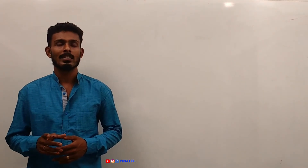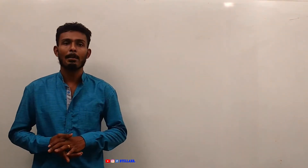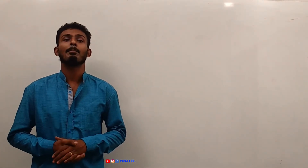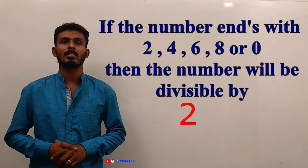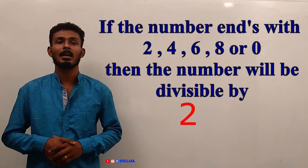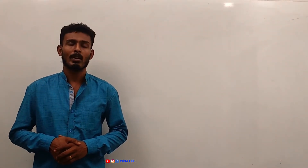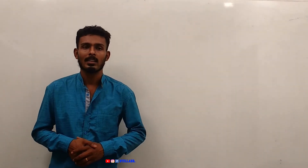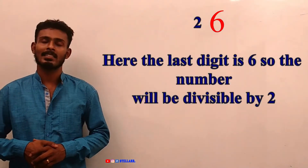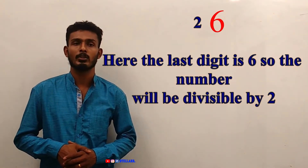Moving forward, test of Divisibility by 2. If the number is even, or if the number ends with 2, 4, 6, 8, or 0, then the number will be divisible by 2. For example, 26 — the last digit is 6, so the number will be divisible by 2.